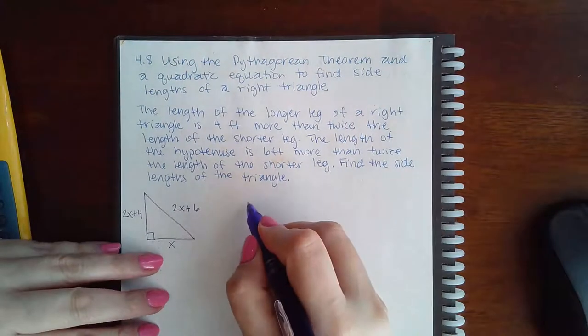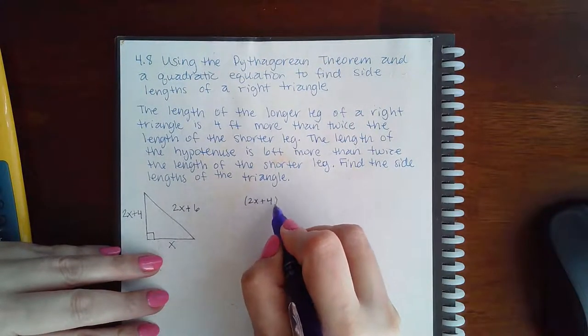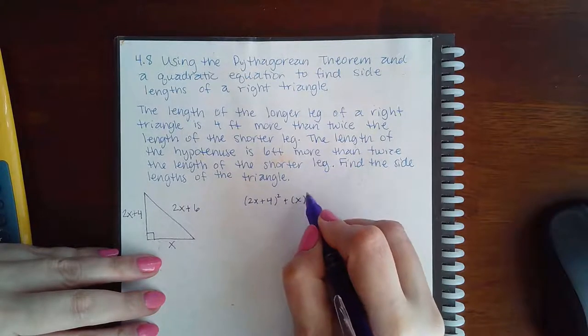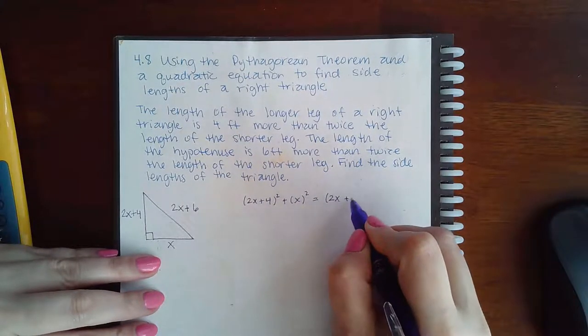So again, using the Pythagorean Theorem, we know that one leg squared plus the other leg squared equals the hypotenuse squared.